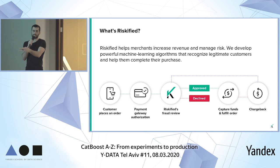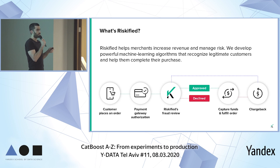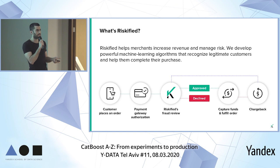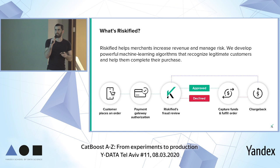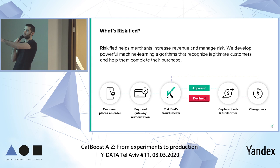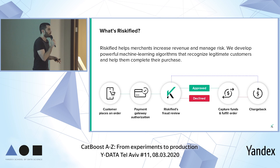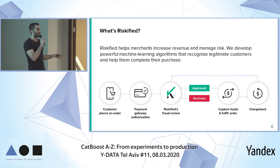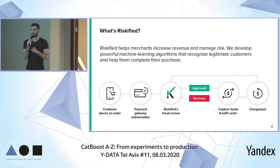If we made a mistake, we have a chargeback — the customer asks for the money back. In that case, if we approved an order that was fraudulent, then Riskified will pay the money back to the customer, so the merchant has a kind of insurance. Regarding labels and ground truth: we do not have ground truth for all of our data. If we approve an order, we eventually know whether it was fraudulent or not. But if we decline an order, we do not know what happened — whether it was a legitimate customer or fraudulent.